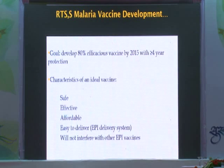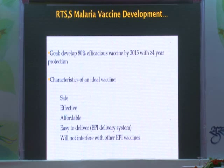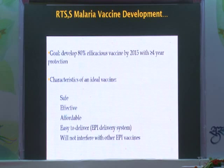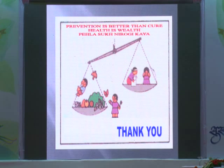The goal is to develop an 80% efficacious vaccine by 2015, with more than four years of protection. The present vaccine is only 50% efficacious with only one year of protection. Characteristics of an ideal vaccine: safe, effective, affordable, easy to deliver, and no interference with other vaccines. Thank you very much.